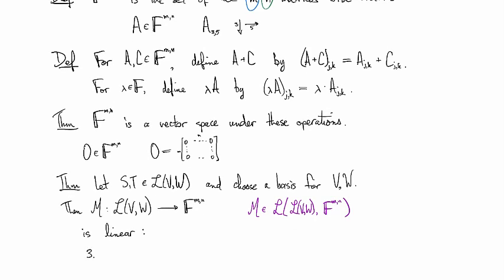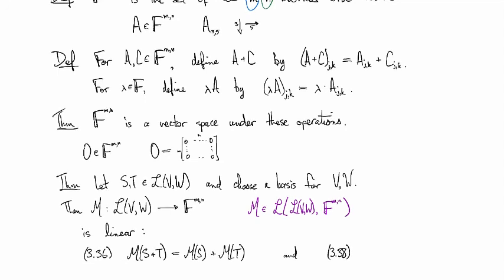And this is broken down into two theorems in the book. So the one 3.36 is additivity. So this is that the matrix of the sum of two transformations is the sum of the matrices of the individual transformations. And then there's also 3.38, which is that the matrix of a scalar multiple of a transformation is the same thing as the scalar times the matrix of the transformation.